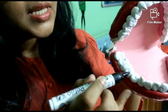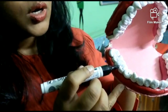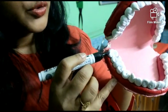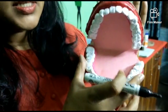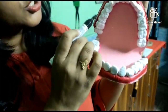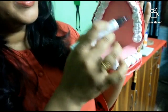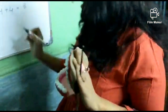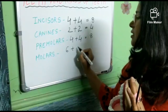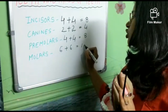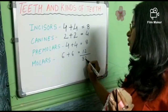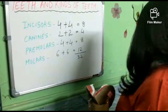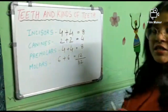Just after the premolars, we have molars. We have six molars in the lower jaw and six in the upper jaw. So six plus six makes twelve molars. When you total all of these — eight incisors, four canines, eight premolars, twelve molars — you will find thirty-two. So inside our mouth, we have thirty-two teeth.